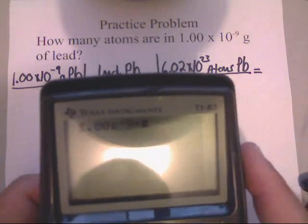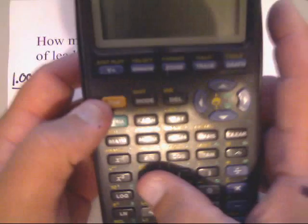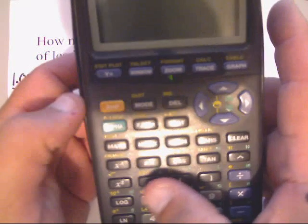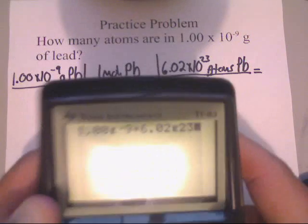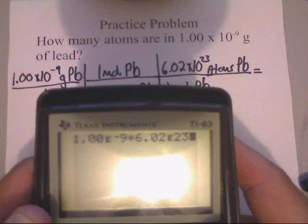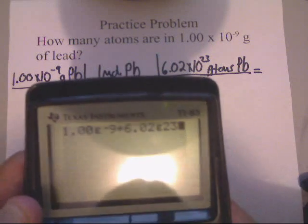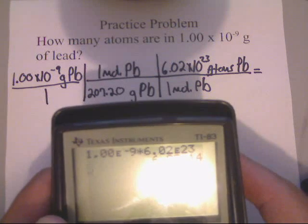And, it'll be times this 6.02. Now, remember, to do times 10, you hit second comma, which is up above the 7, and that gives you that E. Then, you type in the 23rd. So, make sure you can see that. 1.00 times 10 to the negative 9th times 6.02 times 10 to the 23rd. After that, you can press Enter. And, that's the entire value of the numerator.